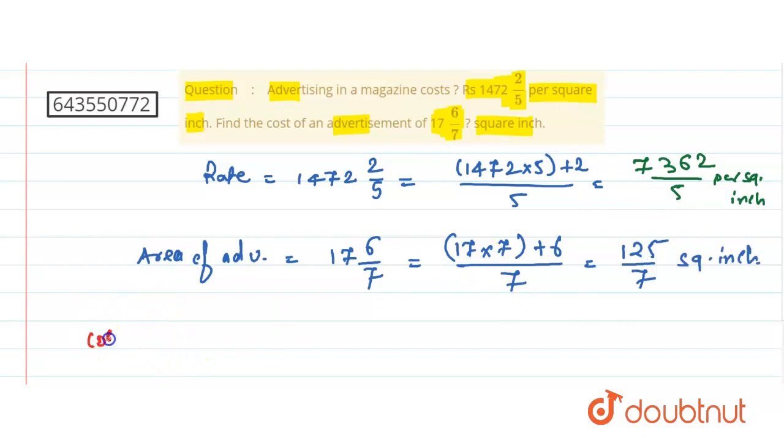Therefore, cost of advertisement is what? Cost is equal to total area into rate, so area of advertisement into rate per square inch. This is the area of advertisement: 125/7.